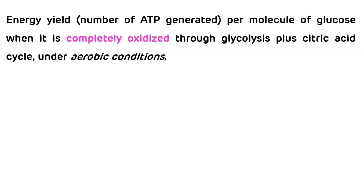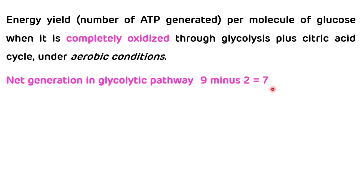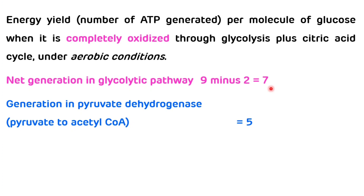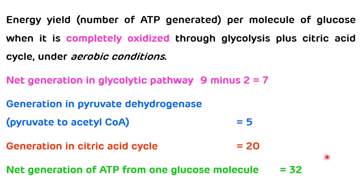Now we will see the total ATP generated per molecule of glucose when completely oxidized through glycolysis plus the citric acid cycle under aerobic conditions. Net generation in the glycolytic pathway is 7 molecules of ATP. Generation in the pyruvate dehydrogenase reaction — conversion of pyruvate to acetyl-CoA — is 5 molecules of ATP. Acetyl-CoA entering the TCA cycle gives 20 molecules of ATP. So net generation of ATP from one glucose molecule is 32 molecules of ATP under aerobic conditions.